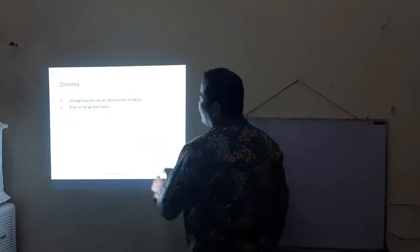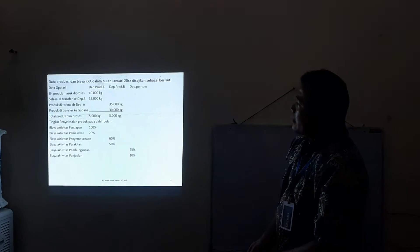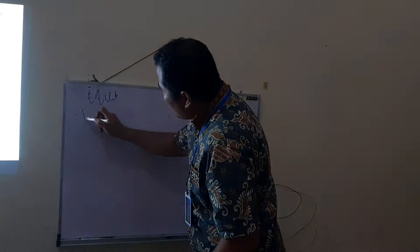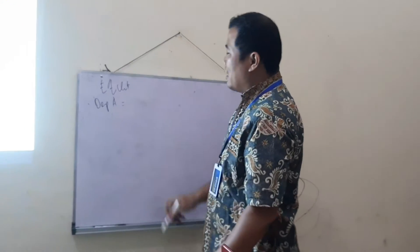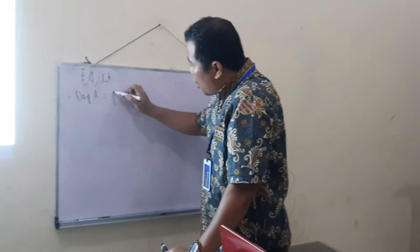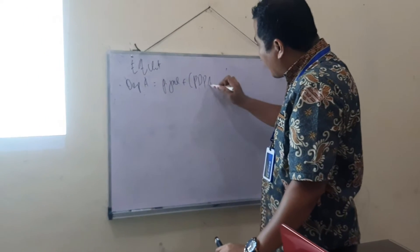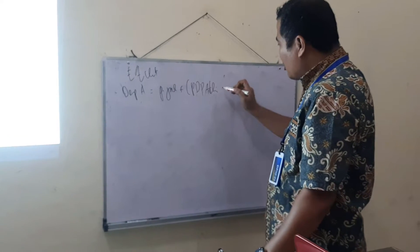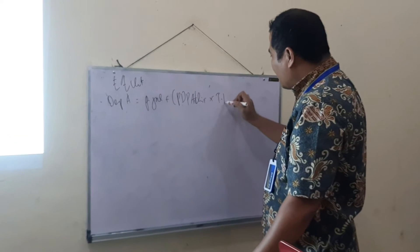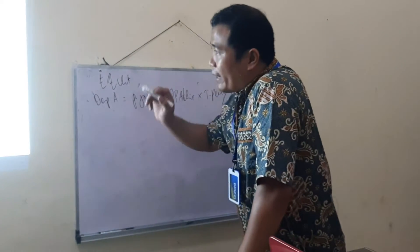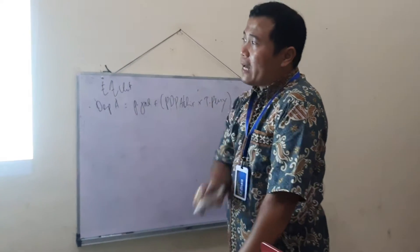Langkah pertama sebelum menghitung biaya per unit adalah menghitung equivalent unit. Rumusnya adalah: produk jadi ditambah produk dalam proses akhir dikali tingkat penyelesaian. Untuk Departemen A terdapat dua aktivitas.